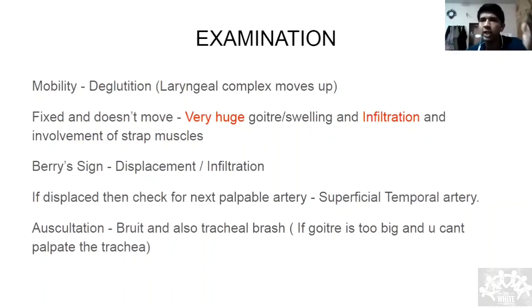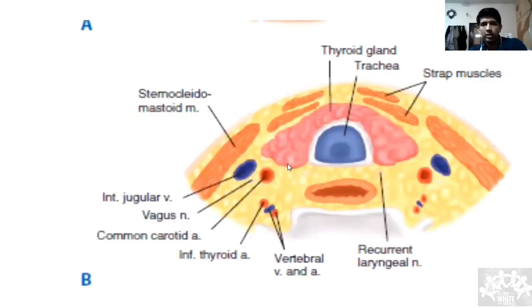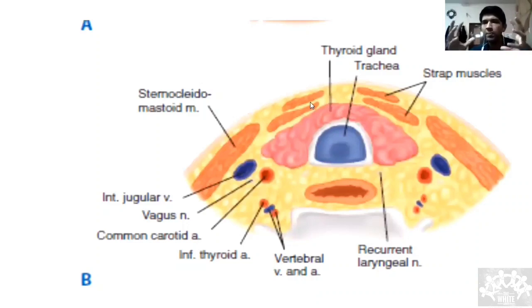Two conditions when the thyroid doesn't move with deglutition: one, if it is very huge — so large that even if it is moving you can't appreciate it; and two, if it is infiltration, meaning it has infiltrated through the deep fascia into the strap muscles. Strap muscles don't move, so the thyroid stuck to them won't move with deglutition.